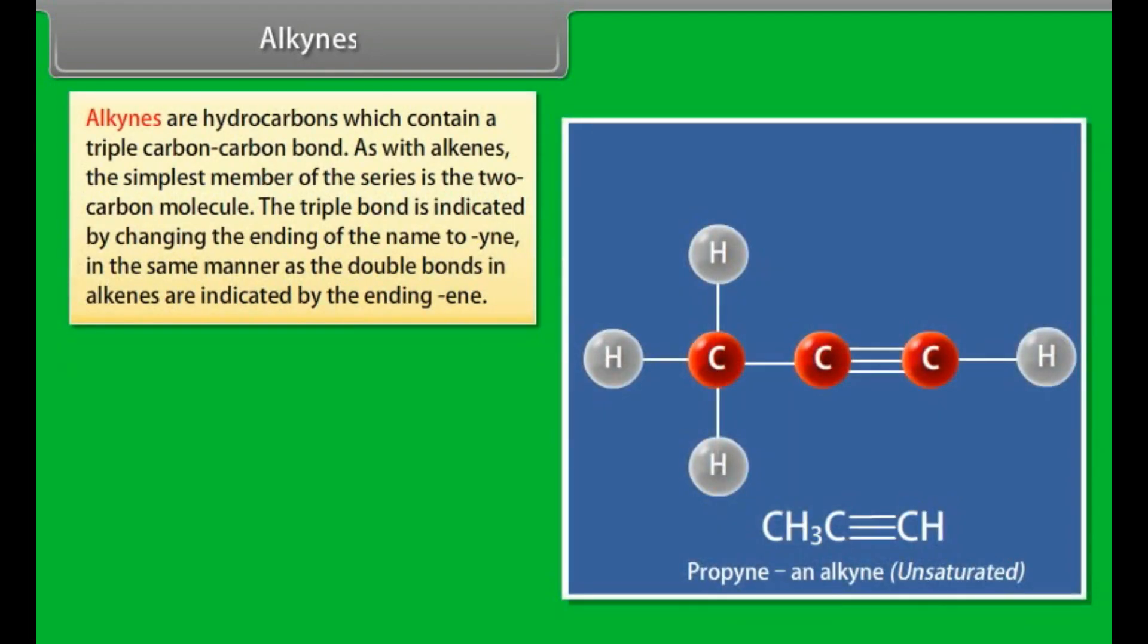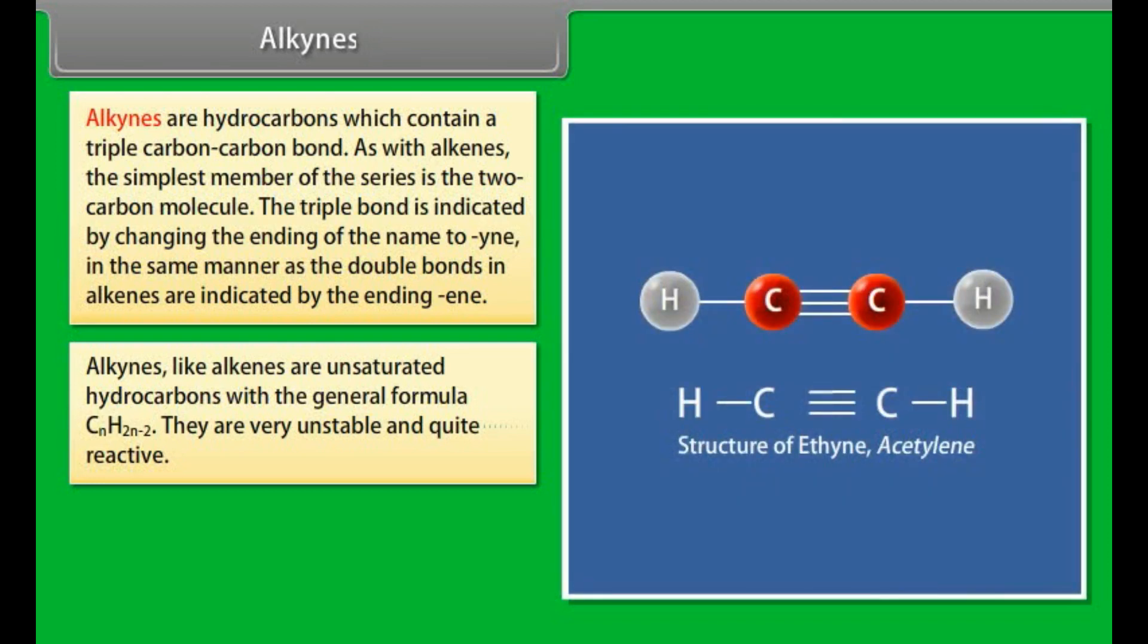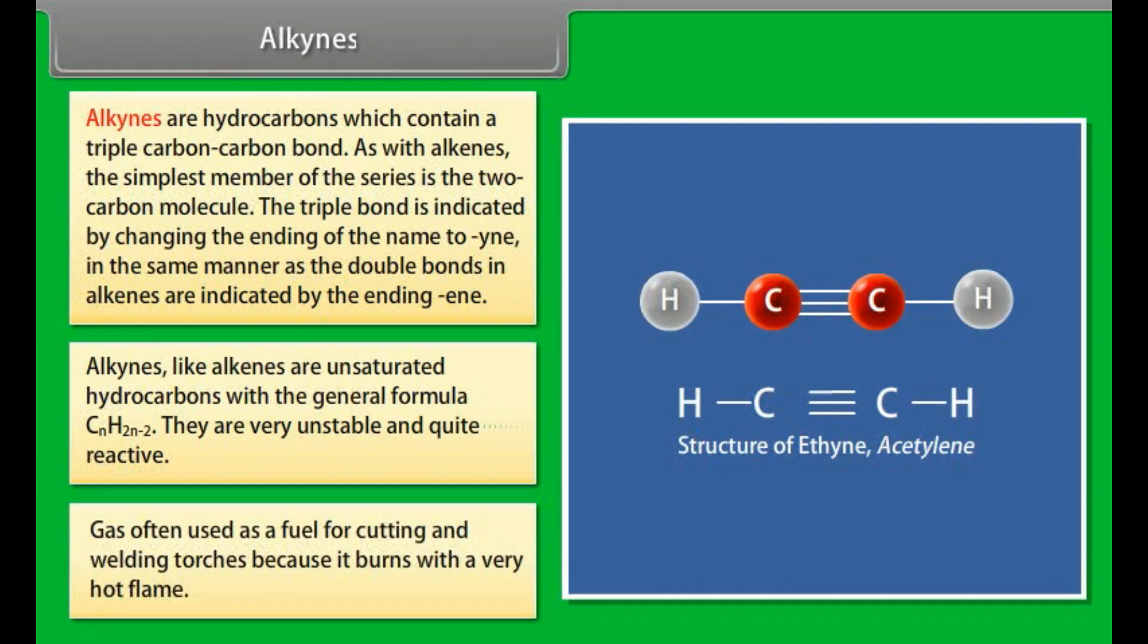Alkynes. Alkynes are hydrocarbons which contain a triple carbon-carbon bond. As with alkenes, the simplest member of the series is a two carbon molecule. The triple bond is indicated by changing the ending of the name to -yne, in the same manner as the double bonds in alkenes are indicated by the ending -ene. Alkynes, like alkenes, are unsaturated hydrocarbons with the general formula CnH2n-2. They are very unstable and quite reactive. For example, ethyne, the simplest alkyne which is more commonly known by its common name acetylene, is a gas often used as a fuel for cutting and welding torches because it burns with a very hot flame.